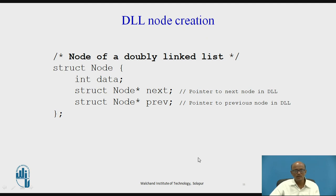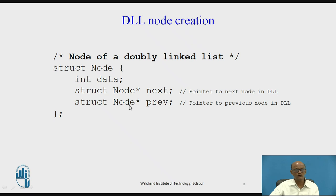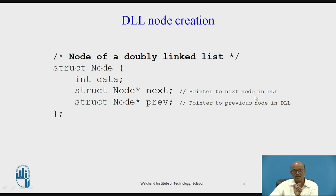Doubly linked list node creation: to create a node, we define a structure named node. It consists of three parts. The first part is the data part, and the two other parts are pointers — one pointing to the next node and one pointing to the previous node. The data type is integer, meaning only an integer can be stored in the data part. The pointer is declared as node* next, meaning it stores the address of the next node in the doubly linked list.